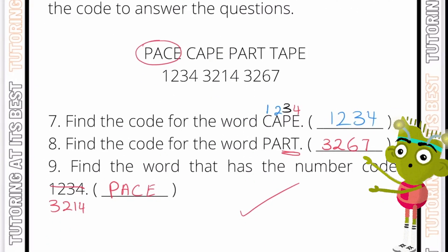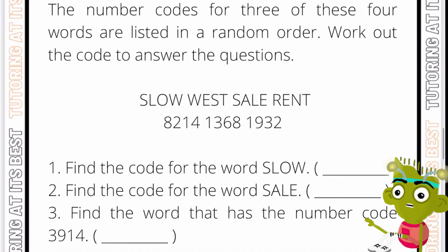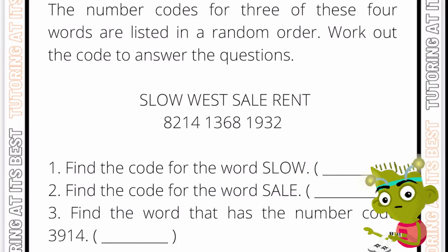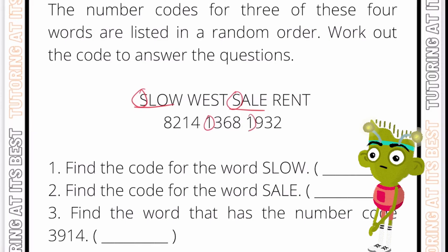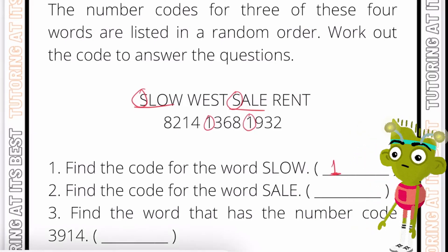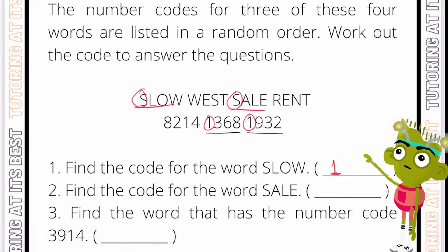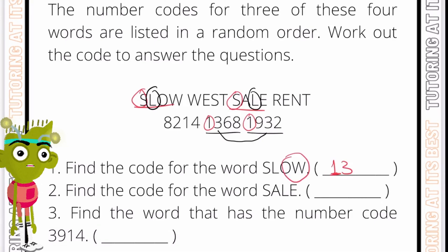Don't forget to pause the video, attempt the question, and then press play to go through it. In our next set of questions we have four words and three numbers. Starting with the letter S: 'slow' and 'sail' both start with S, and the two codes also start with 1, so S equals 1. Next, looking at codes 13 6 8 and 1932, both have a 3 in the second and third positions. The letter L is in the second and third positions in 'slow', so L equals 3. This means O and W can be 6 and 8.